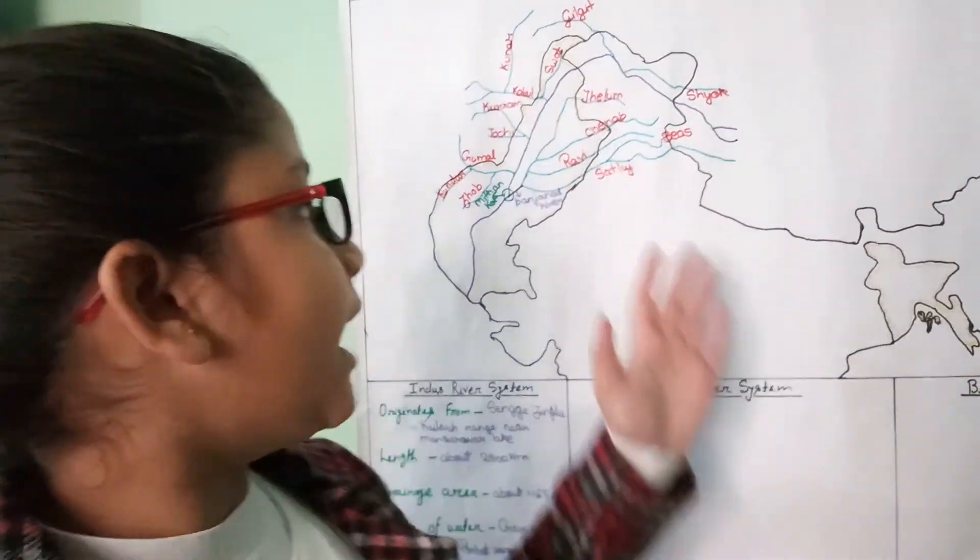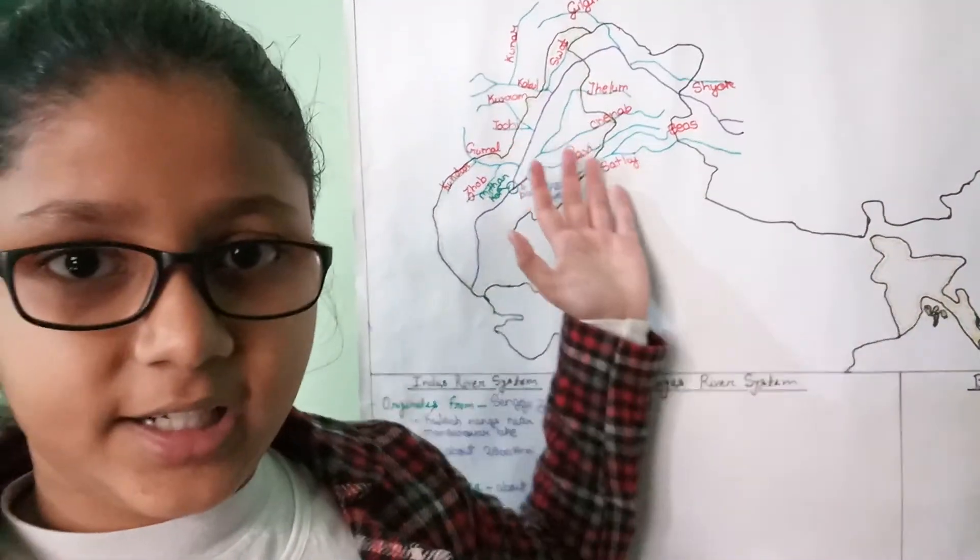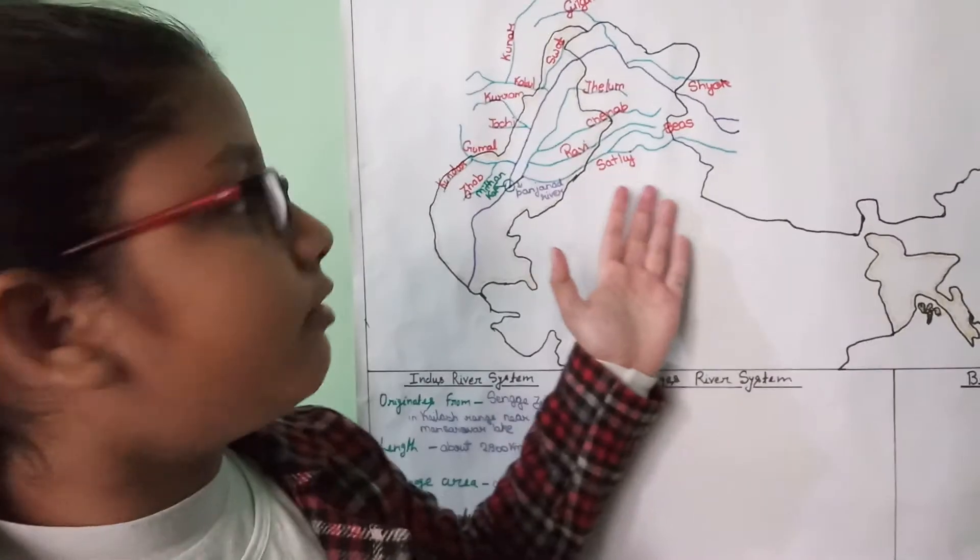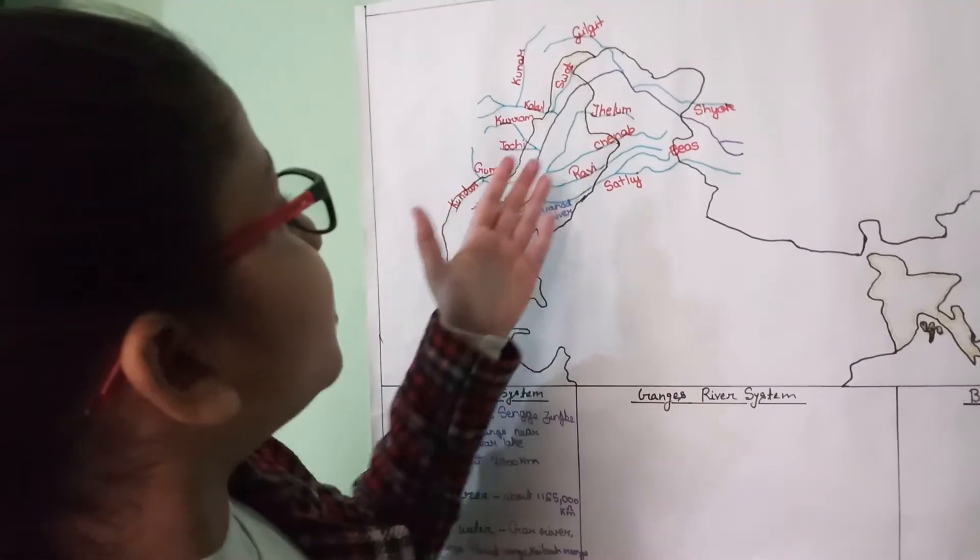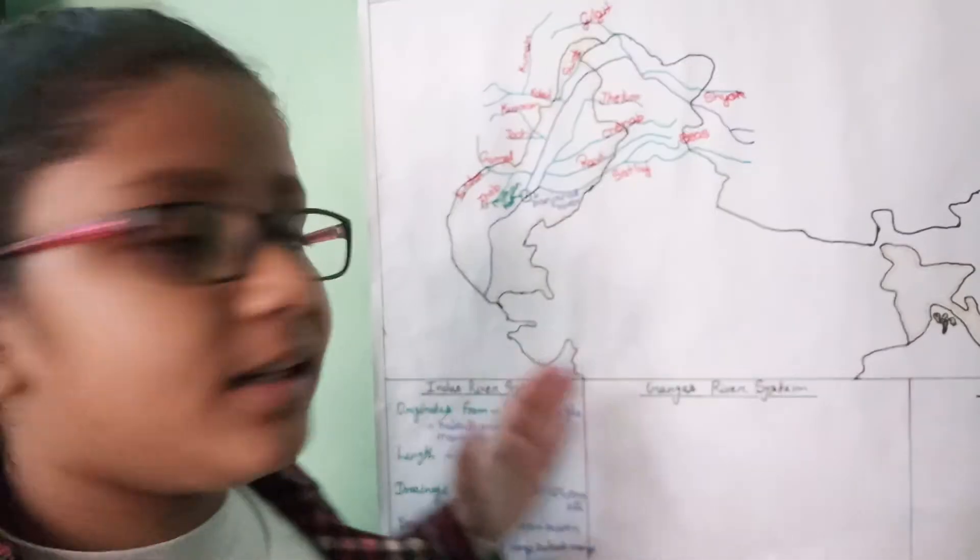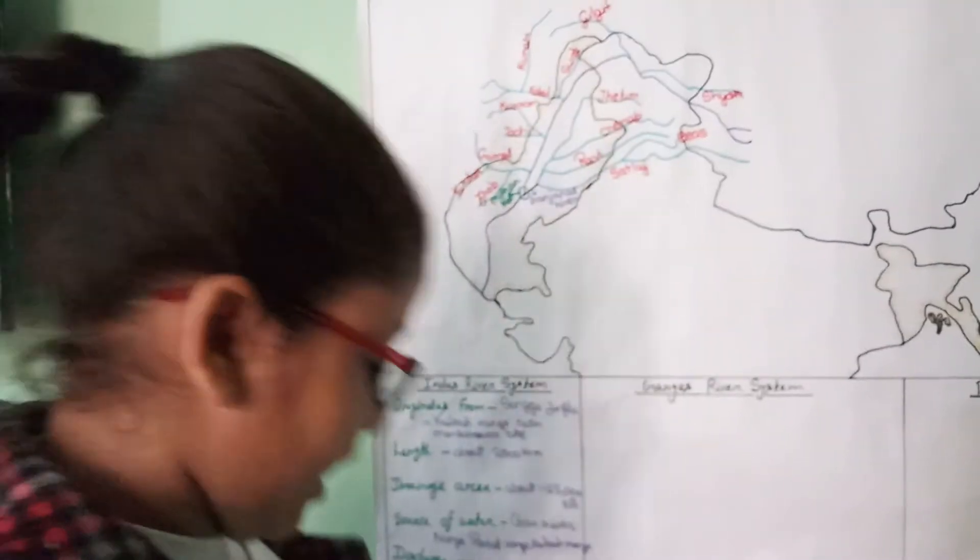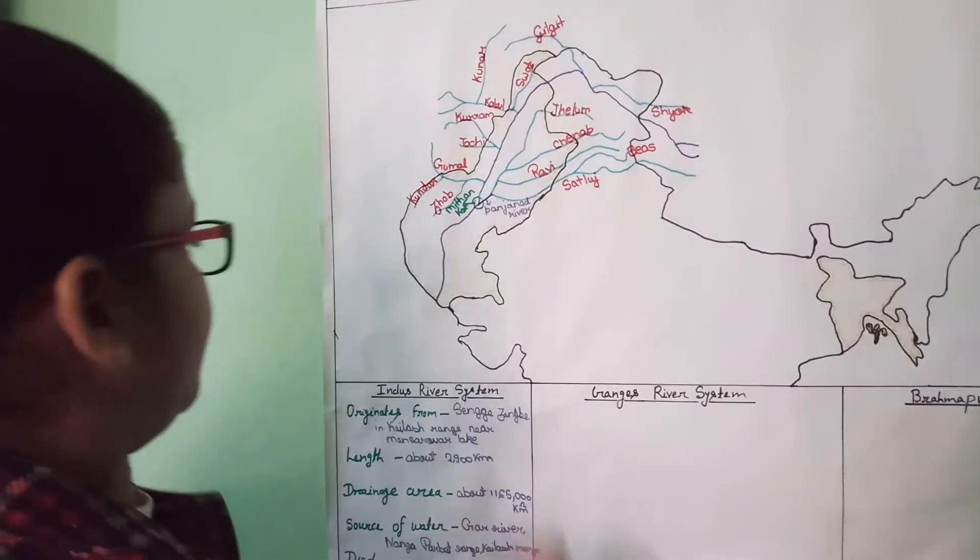So now we have completed the major tributaries of this river. So this river empties by falling in the Arabian Sea and makes a large delta here.